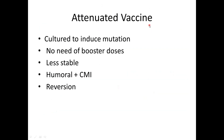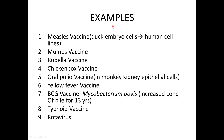The attenuated vaccine is cultured to induce a mutation in the virus — it is a live virus whose virulence is reduced. Since it is live, you do not need a booster dose. However, it is less stable and has the problem of reversion, where the non-pathogenic form can revert back to causing disease. It gives both humoral and cell-mediated immunity.